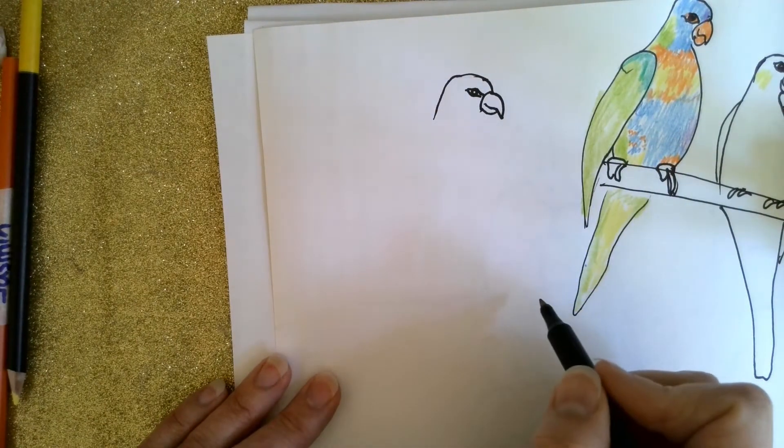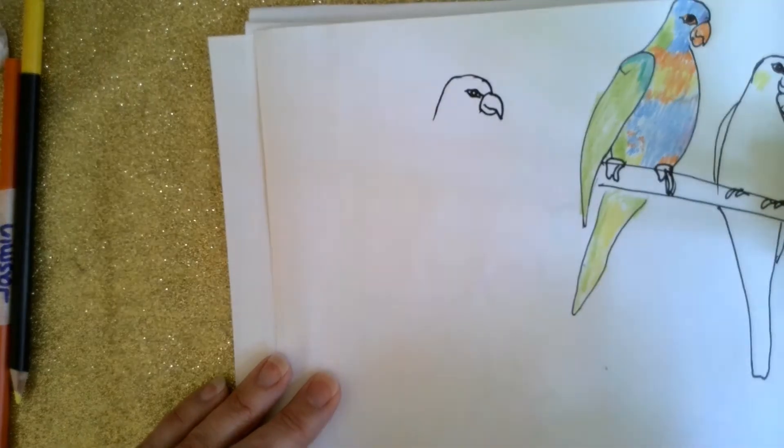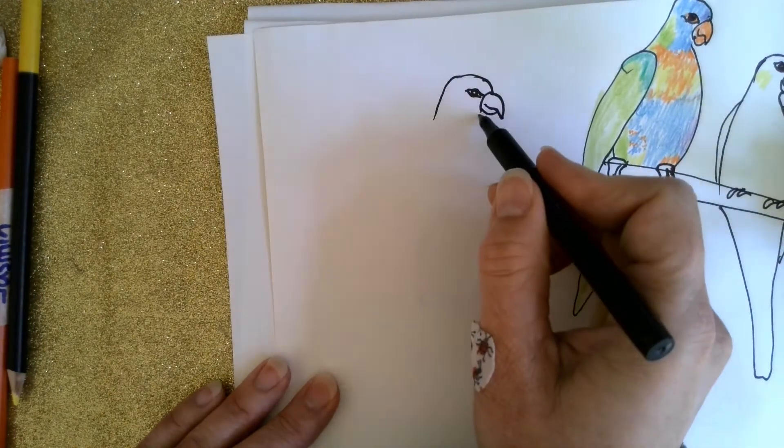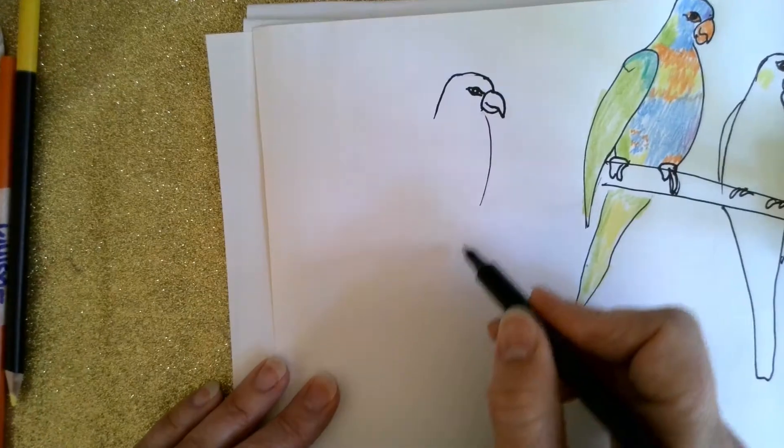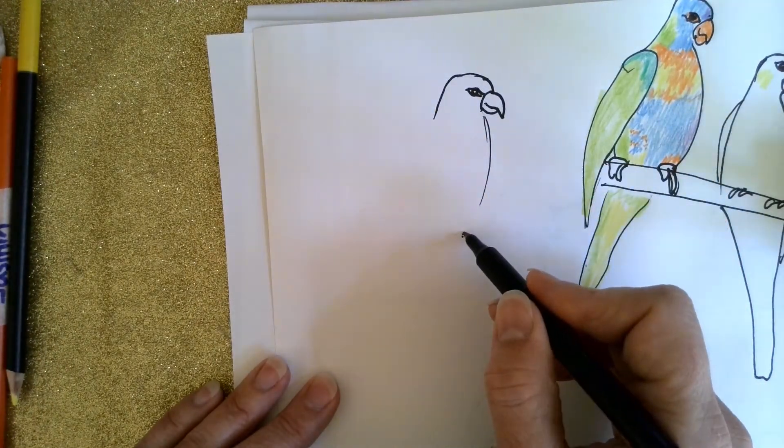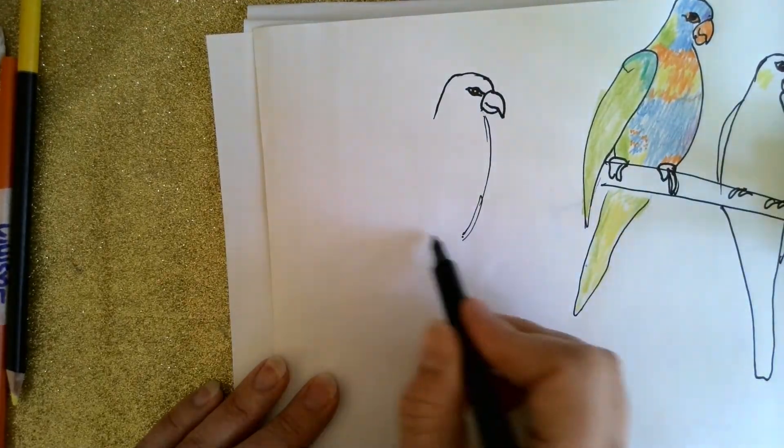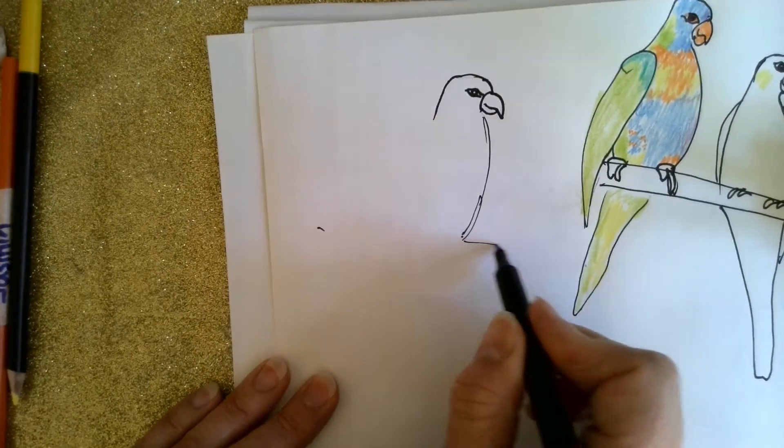Now we're going to do our lorikeet on a perch like these ones here. So we'll come down to about there, and then we'll draw going across here.